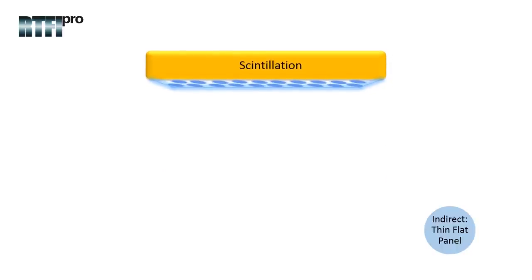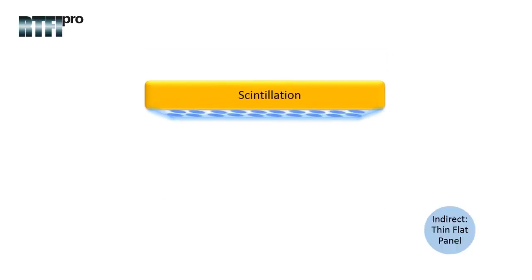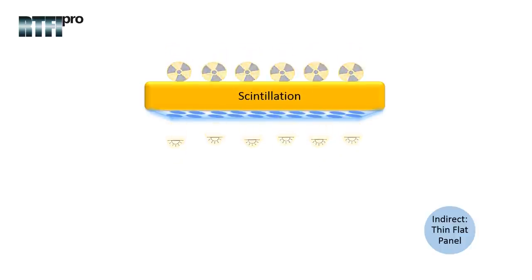The top scintillation layer is the layer where x-ray photons are converted into light photons. This process is called scintillation as it produces a burst of light. Each photon that strikes the scintillation layer creates a burst of light in all directions.